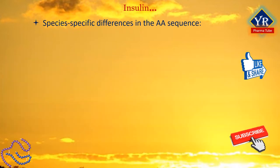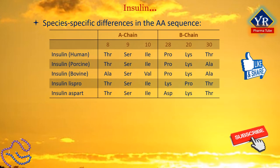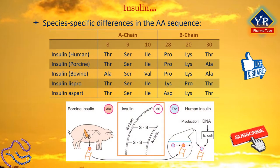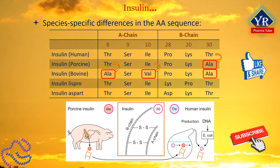There are some species-specific differences in the amino acid sequence of the hormone. Porcine insulin differs from human insulin only by the presence of alanine instead of threonine as the last amino acid in chain B. Bovine insulin, in addition to this change, has two more alterations in chain A: threonine and isoleucine at positions 8 and 10 respectively are replaced by alanine and valine respectively. When compared with human insulin, bovine and porcine insulins are equipotent.